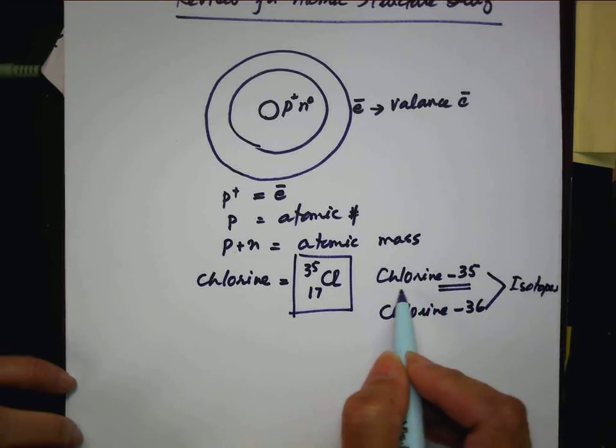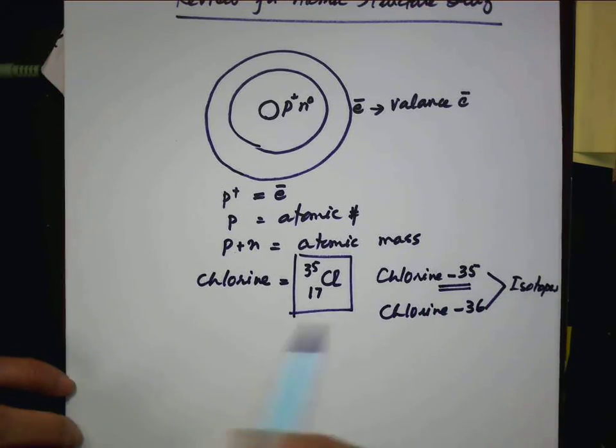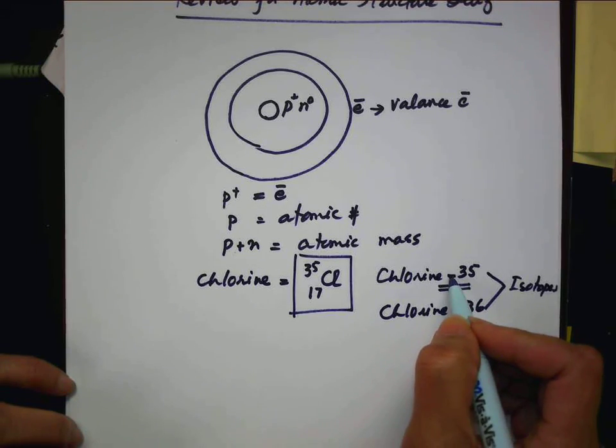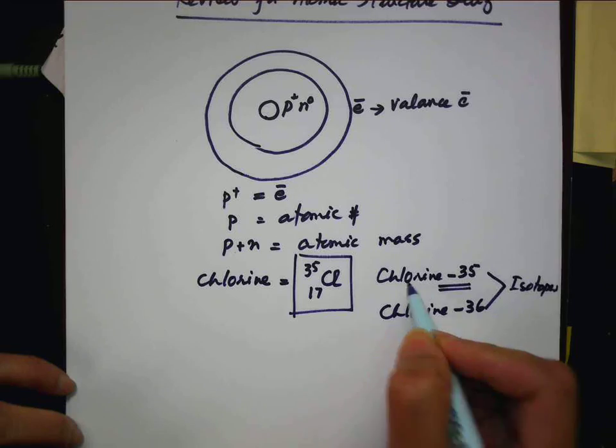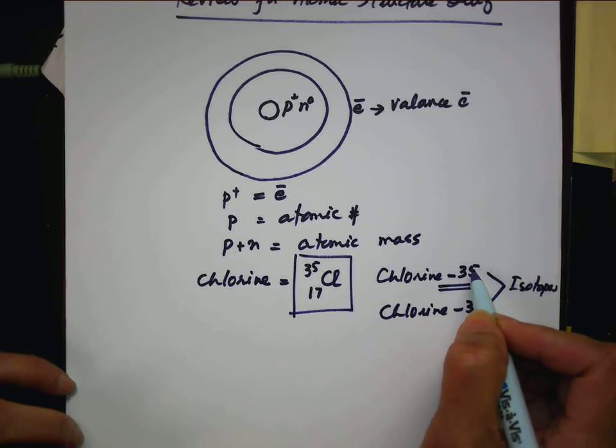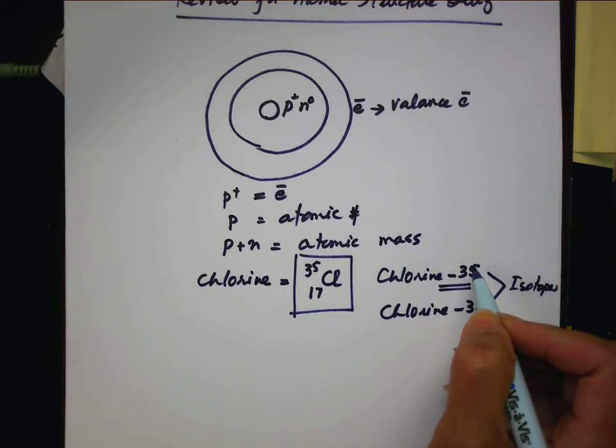So when you see any element with a dash and the number, that means that element has a mass of that. The weight of that. That can be different weights.